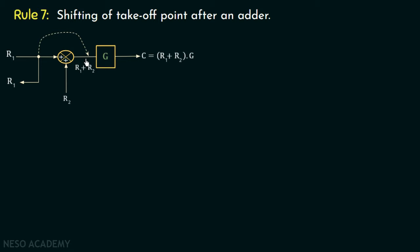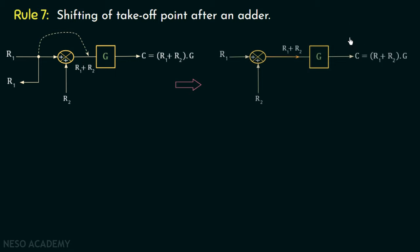Let us try to shift this takeoff point without any change. Consider this block diagram one more time in which we have shifted this takeoff point after the adder. Now the output of this adder is r1 plus r2. The output of the takeoff point before shifting was r1, but now after shifting it is r1 plus r2. The output of a takeoff point must be constant before and after shifting, so we need to make this output equal to r1. For that we need to subtract r2, which requires one more adder.